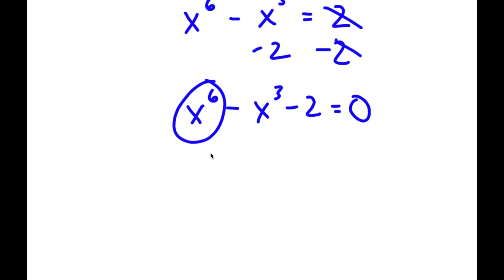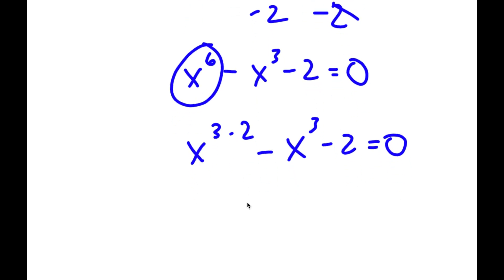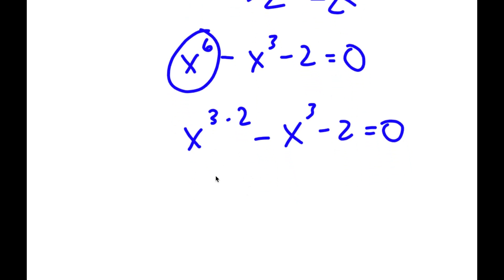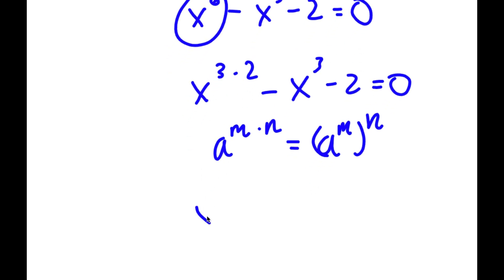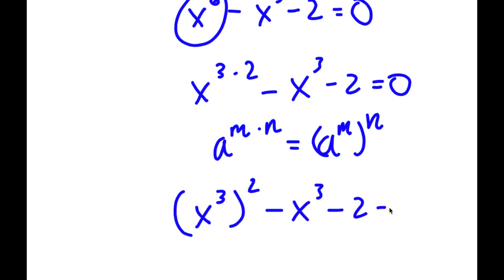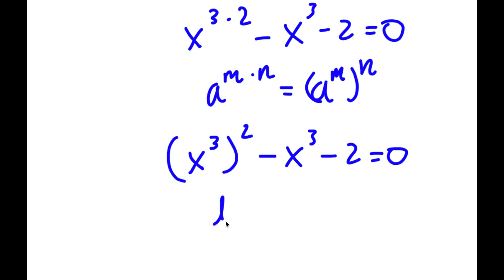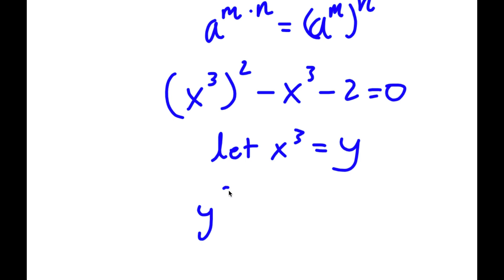Now, x to the power of 6, I'm going to write as x to the power of 3 times 2. And if I have something in the form a to the power of m times n, this is equal to a to the power of m to the power of n. So x to the power of 3 times 2 I'm going to write as x to the power of 3 to the power of 2. So I have this minus x to the power of 3 minus 2 is equal to 0. And now I'm going to let x to the power of 3 equal to the variable y, so now I have y squared minus y minus 2 is equal to 0.